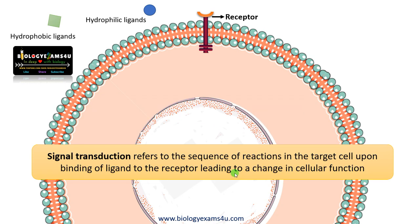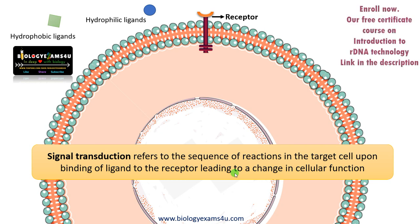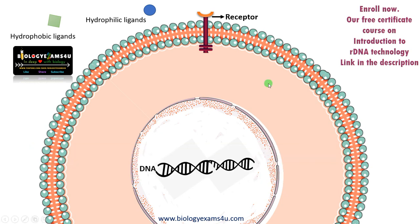Signal transduction refers to the sequence of reactions inside the target cell upon binding of ligand to the receptor, leading to a cellular response, ultimately leading to a change in cellular function.